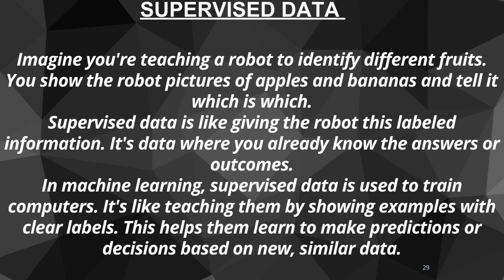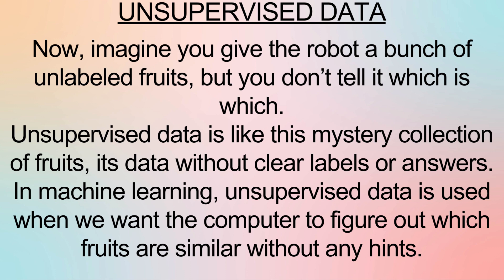Imagine you are teaching a robot to identify different fruits. You show the robot pictures of apples and bananas and tell it which is which. Supervised data is like giving the robot this labeled information. It's data where you already know the answers or outcomes. In machine learning, supervised data is used to train computers — it's like teaching them by showing examples with clear labels. This helps them learn to make predictions or decisions based on new, similar data.